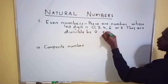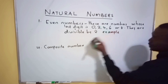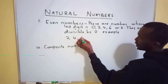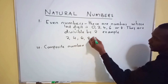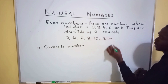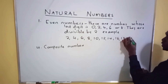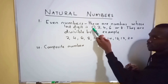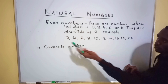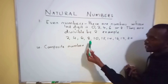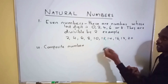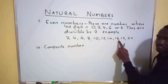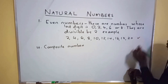Now the examples of even numbers: 2, 4, 6, 8, 10, 12, 14, 16, 18, 20. The condition is that the last digit of a number is 0, 2, 4, 6, or 8. For instance, the last digit of 12 is 2 — it is an even number; the last digit of 14 is 4 — it is an even number; the last digit of 16 is 6 — it is an even number. So these are examples of even numbers.